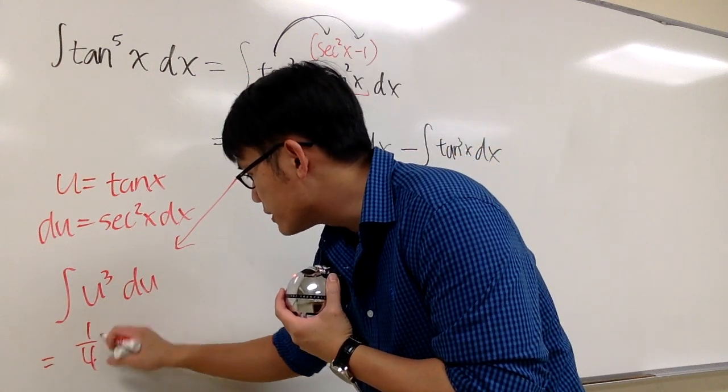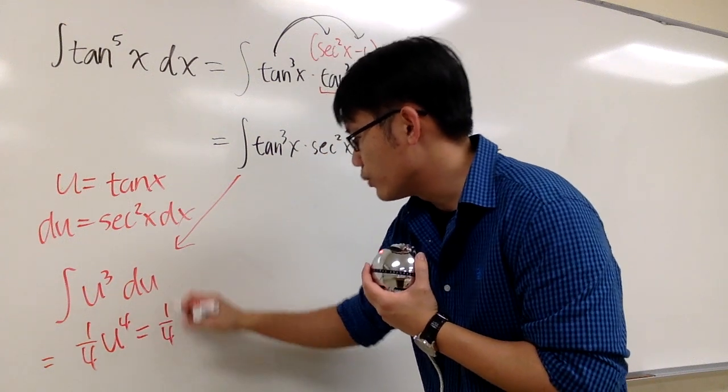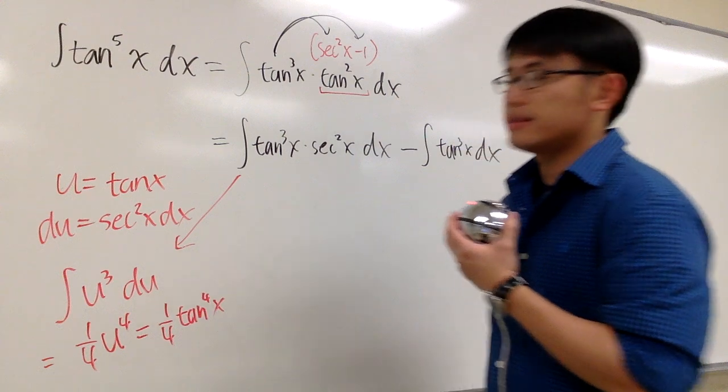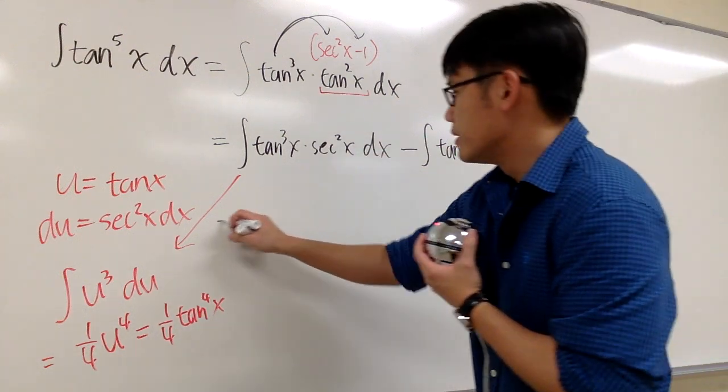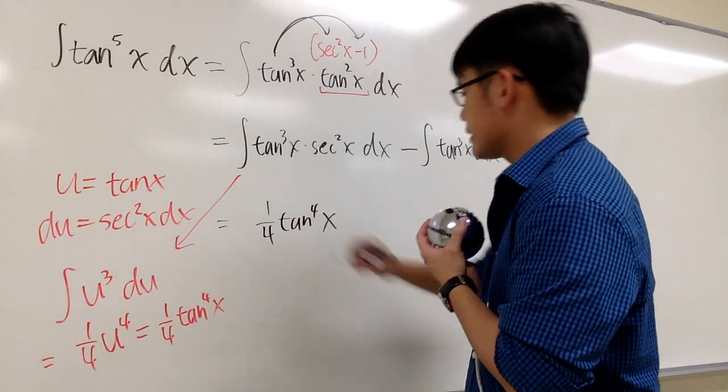This is going to be 1 fourth u to the fourth power, and u is tangent x. So we have 1 fourth tangent to the fourth power x. That's the first integral. So we are done for the first part. 1 over 4 tangent raised to the fourth power x.